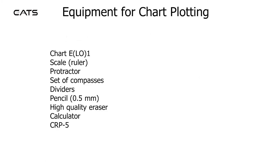Equipment for chart plotting: the chart itself, ELO 1 or 2, scale ruler, protractor, set of compasses, dividers, pencil of 0.5mm or 0.3mm thickness, a high quality eraser, calculator, and the CRP5.